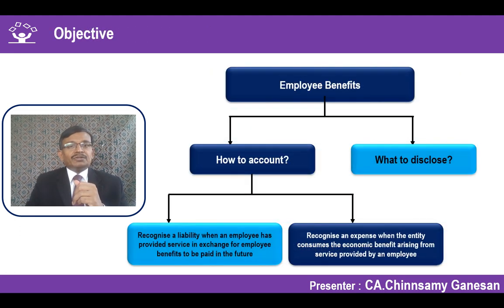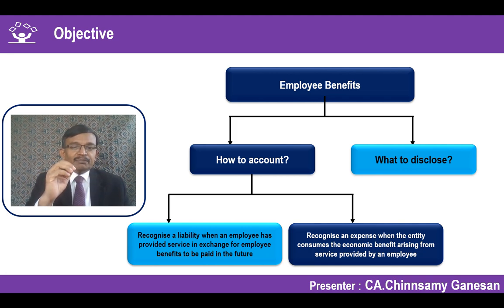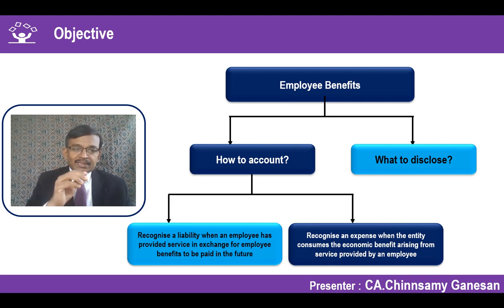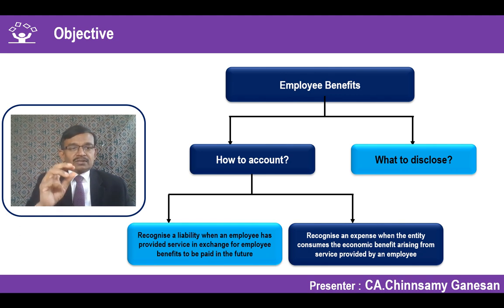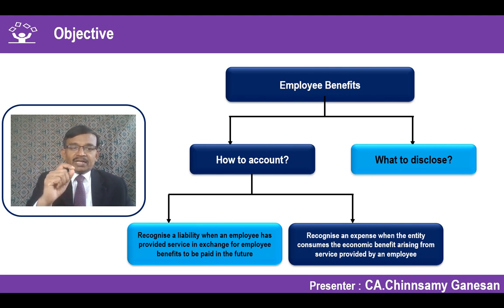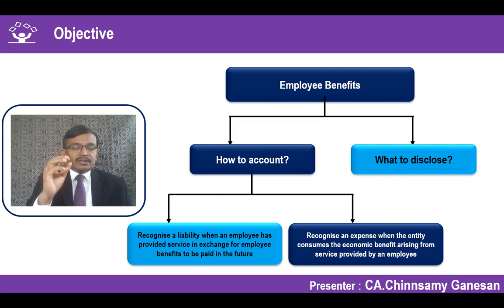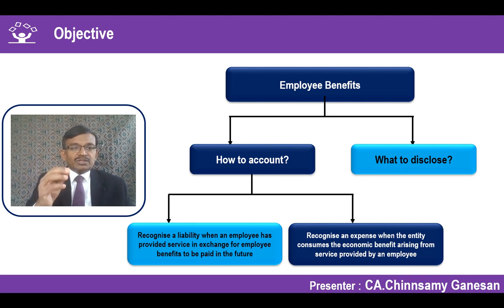Let's go into the objective. This standard prescribes how employee benefits have to be accounted for. When we are talking about accounting, both recognition and measurement are covered in accounting for employee benefits. What type of disclosures are required for persons to understand? When it comes to accounting for employee benefits, normally the entity will recognize an expenditure.